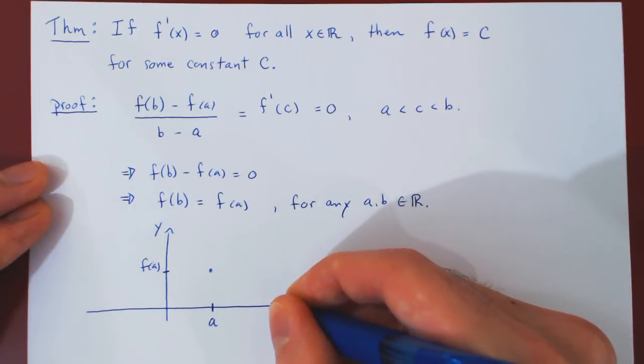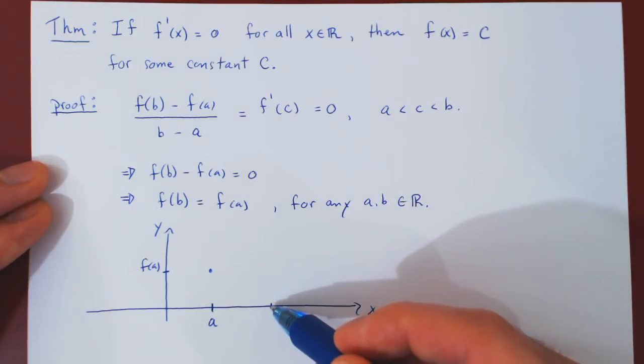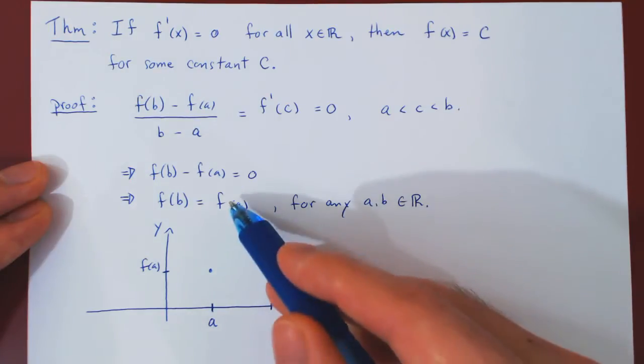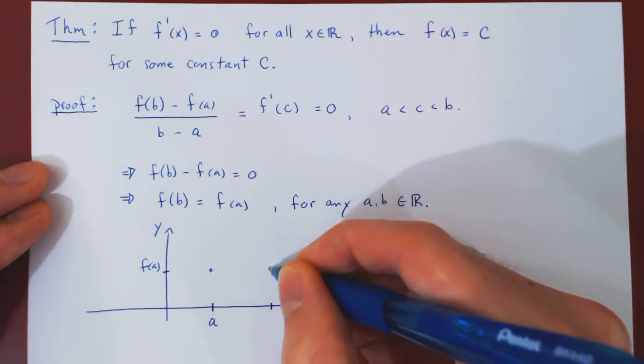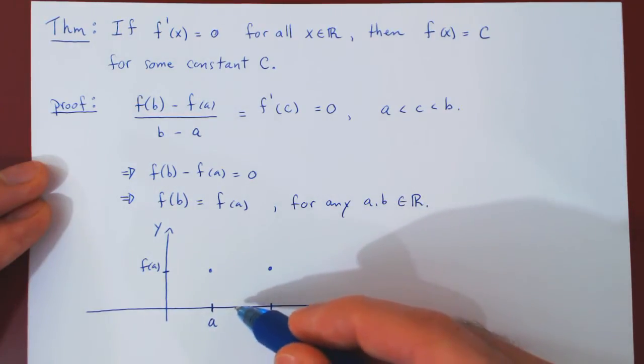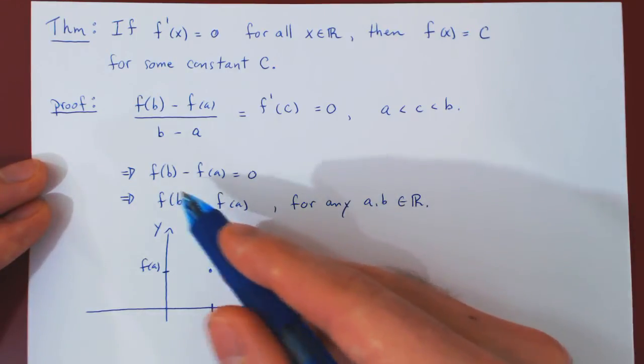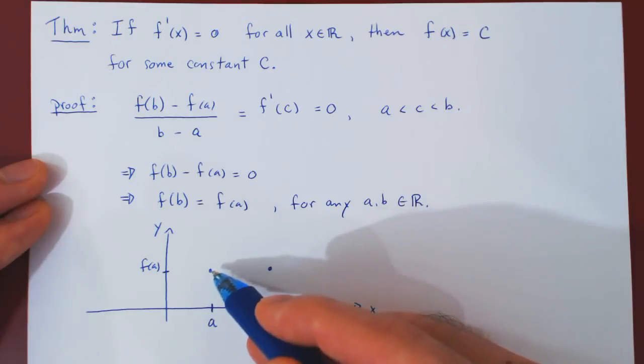Suppose b is here. And you say, well, what is the y value at this value of b? Well, it is equal to f of a. Pick a different choice of b. Suppose here. And say, well, what is f of b here? Well, it is also f of a.